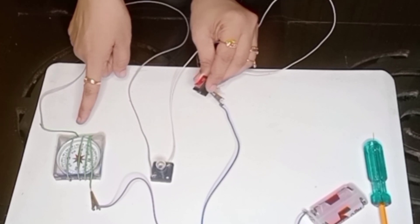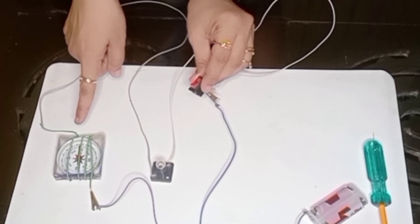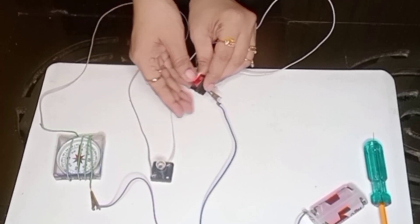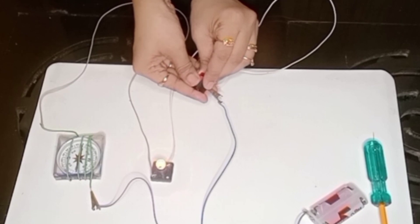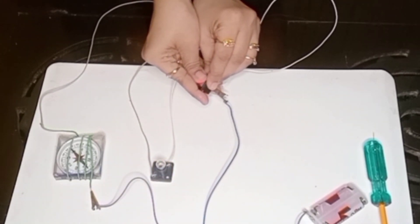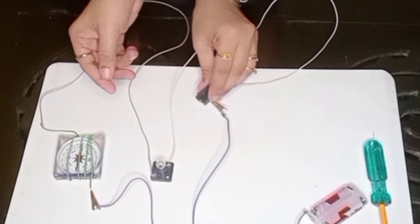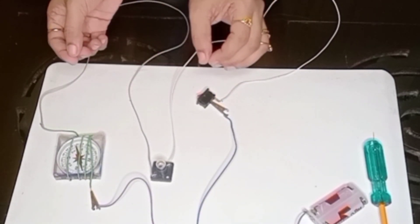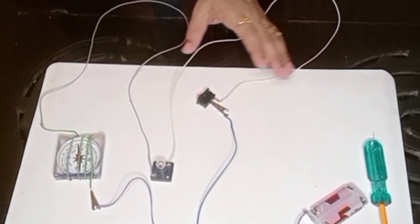Observe carefully. See, again it came back to its original position, that is the earth's magnetic field. Again if I just switch it on, can you observe the magnet gets deflected again? Again I am going to switch it off. So what do we conclude? It proves that when electric current passes through the wire, a magnetic field is created.